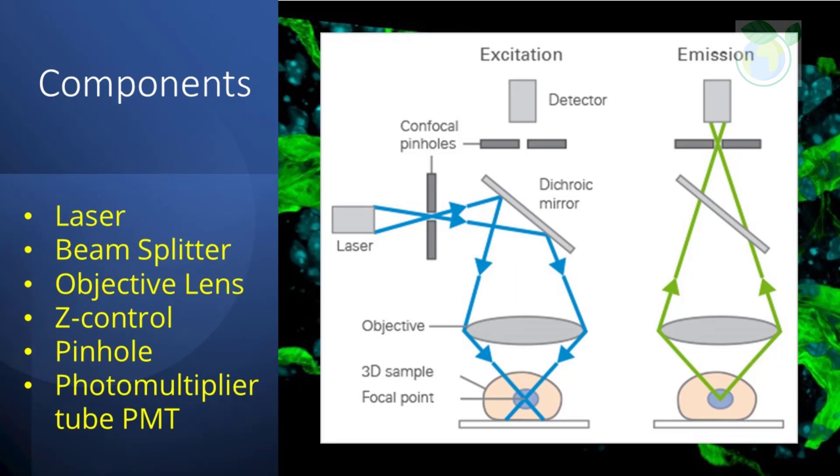Alongside that exists a scanner, which is a unit based on two or more mirrors which guide the focused laser beam across the specimen, pixel by pixel, and line by line.